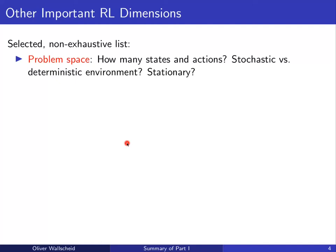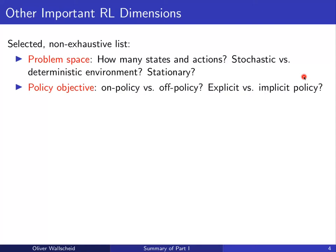Width and depth are not the only important RL dimensions discussed. First, it is important to consider the problem space: how many states and actions are there, whether the environment is stochastic or deterministic, and whether it is stationary or changing over time — for example, a technical system subject to wear leading to changing environmental behavior. The policy in the control context can be learned either in an on-policy or off-policy way. In the off-policy case, a behavior policy b is added as an add-on to the target policy pi.